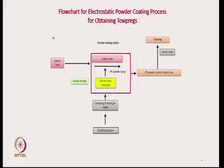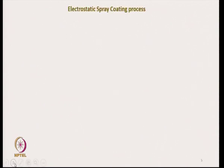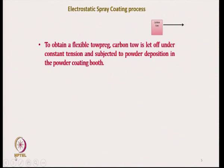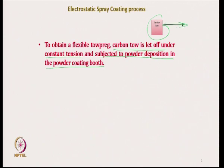Once the polypropylene powder is coated — the fluidizing hopper generates a cloud of polypropylene powder and the spray gun coats the carbon tow with the polypropylene powder — immediately after that this PP powder-coated carbon tow is passed through the hot air oven. To obtain a flexible tow preg, carbon tow is let off under constant tension, which is important, and subjected to powder deposition in the powder coating station.